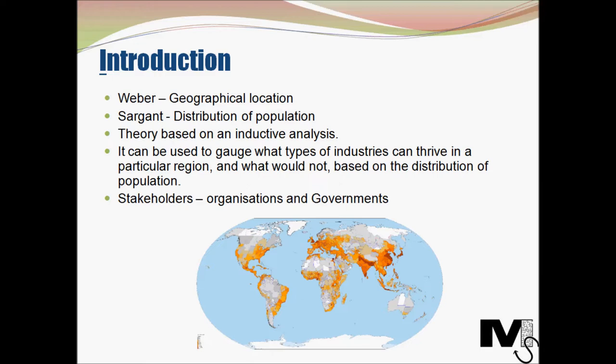Sargent forged his theory based on an inductive analysis. This basically means that he started off with observations, leading to studying patterns, and then to formulating his hypothesis based on actual statistical data. It can be used to gauge what types of industries can thrive in a particular region and what would not. That is one of the primary uses of Sargent's theory of location.